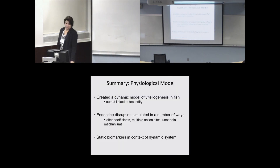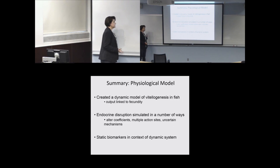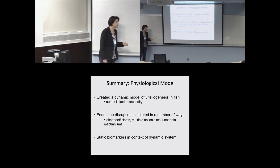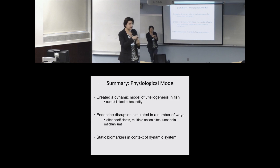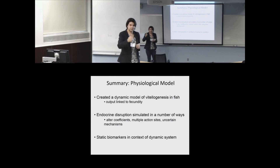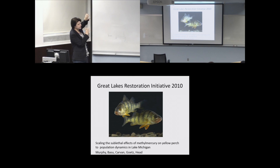So this physiological model — a dynamic model of vitellogenesis in fish — was linked to fecundity. You can simulate endocrine disruption a number of different ways: alter the coefficients, have multiple action sites on certain mechanisms. It really places these static biomarkers in the context of a dynamic system. Because when you're measuring hormone levels, it's a snapshot in time, so putting it into a dynamic system is a bit more informative. We then wanted to take those two AOPs and make quantitative linkages from egg production and behavior to population-relevant endpoints, and start moving backwards.